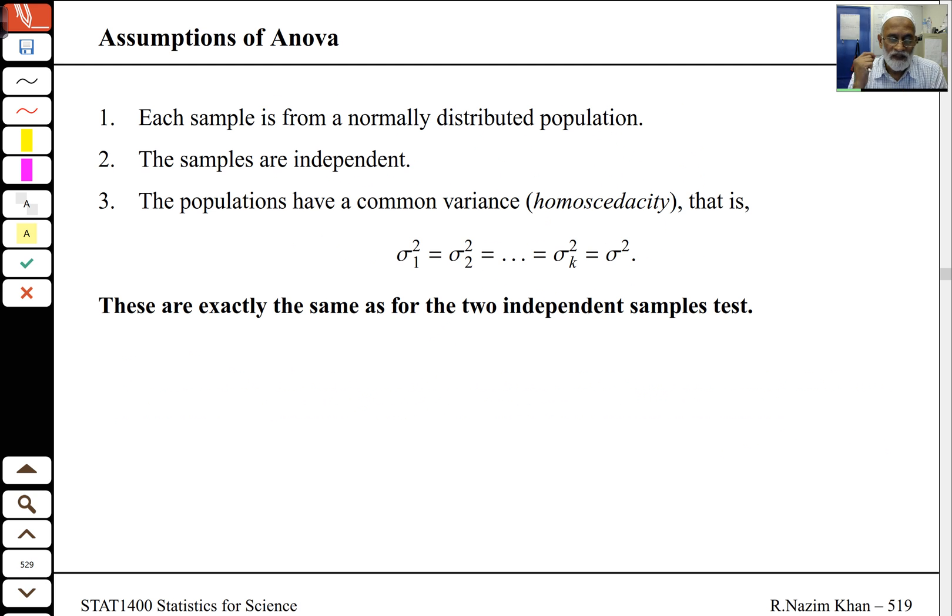The assumptions of ANOVA: each sample is from a normally distributed population, the samples are independent, and I'm assuming a common variance, so all the variances are the same. You might hear this word homoscedasticity, which essentially means the variances are equal. This is exactly the same as for the two independent sample test, so how we check this will be also exactly the same, although we will see some other new techniques.